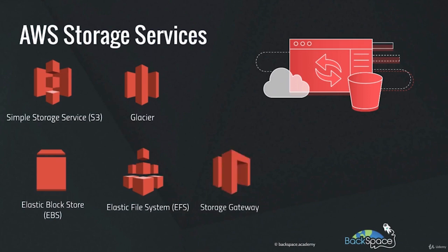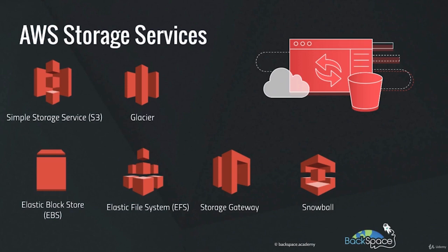The AWS Storage Gateway enables hybrid storage between on-premise environments and the AWS cloud. It provides low-latency performance by caching frequently used data on-premises while storing less frequently accessed data in Amazon cloud storage services. A Snowball device is a portable, petabyte-scale data storage device used to migrate large amounts of data from on-premise environments to the AWS cloud — you download your data to the Snowball device, send it to AWS, and they upload it to an AWS storage service for you.